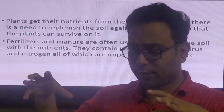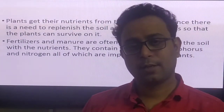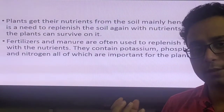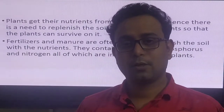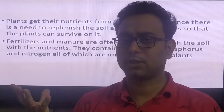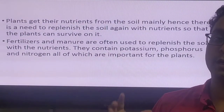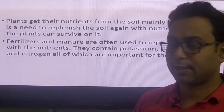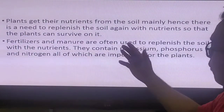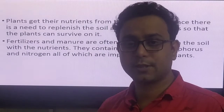If a plant is in a particular static position and continuously gets nutrients from that particular region, after some years the nutrients will not be available in that area of the soil. So how do we overcome this problem? That is what we discuss in today's class. Fertilizers and manure are often used to replenish the nutrient deficiency.